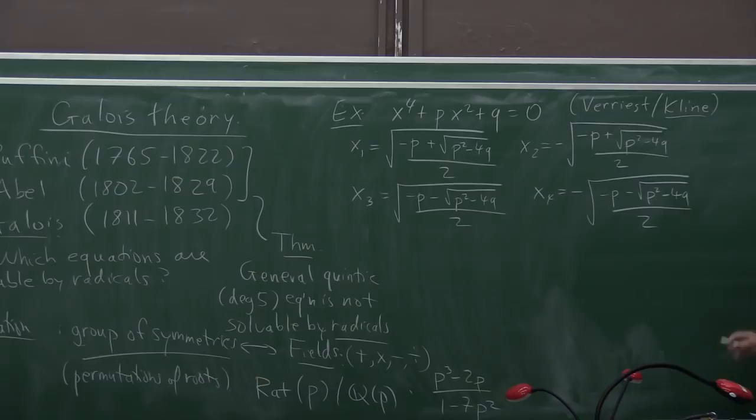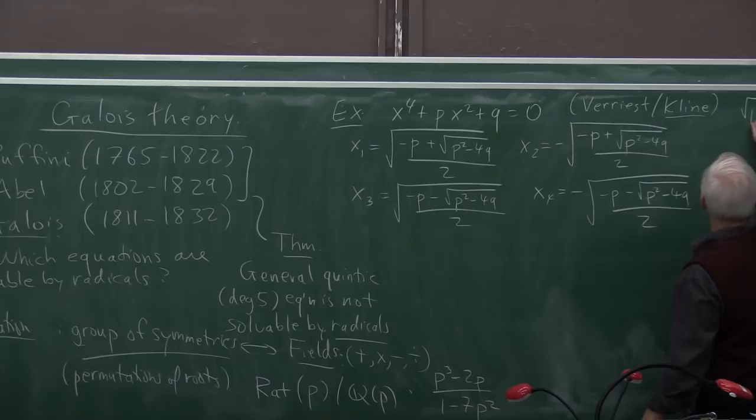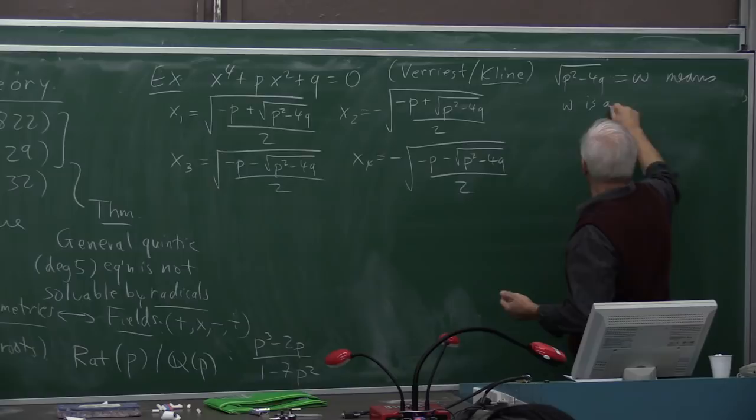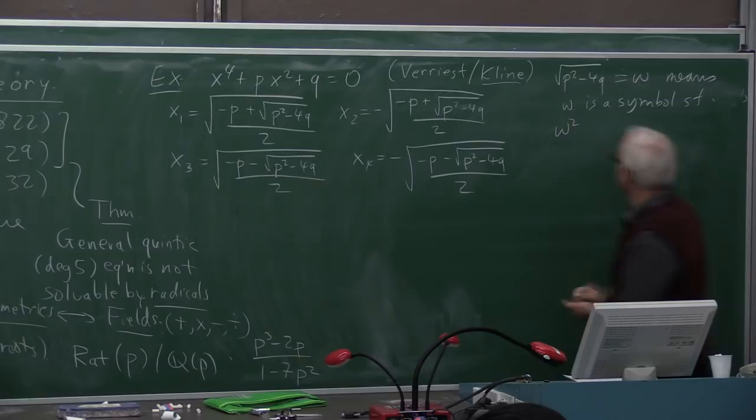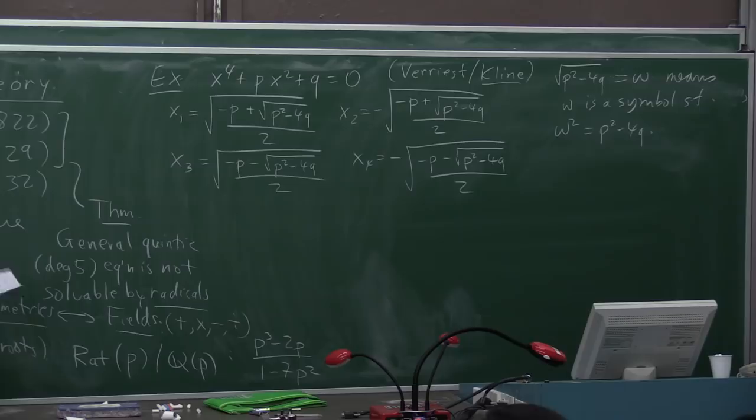And we don't really care about what p and q are. You can almost think of them as being variables here. So when we write p squared minus 4q square root, let's call that w. What this really means is that we're introducing a symbol, w, such that if you square it, then you get p squared minus 4q.